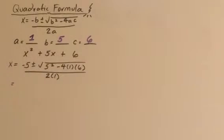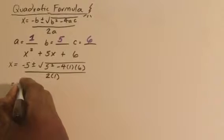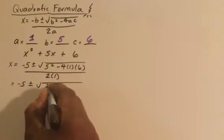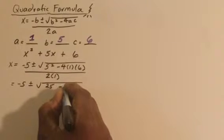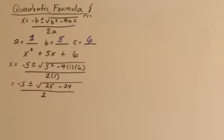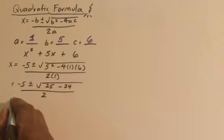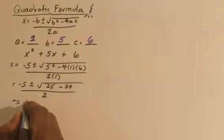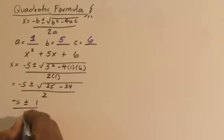Now, when we simplify, we get minus 5 plus or minus the square root of 25 minus 4 times 1 times 6 is 24, and all of that is divided by 2. Now, the square root of 25 minus 24 is 1, so we get minus 5 plus or minus 1 divided by 2.